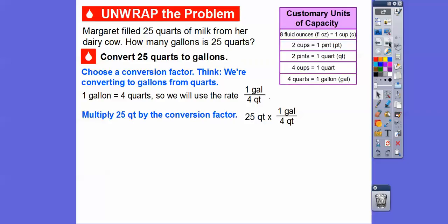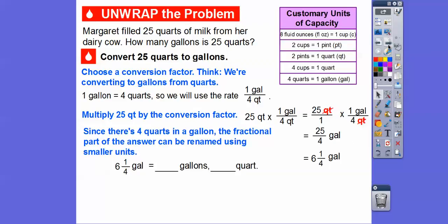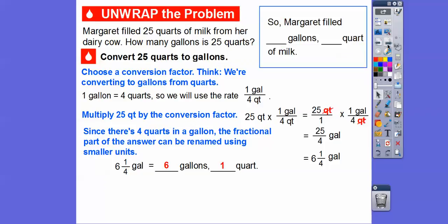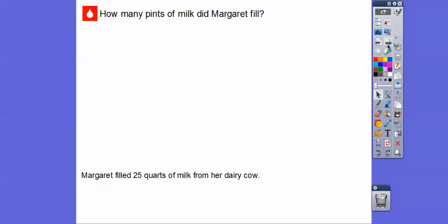We're going to multiply 25 quarts by the conversion factor 1 gallon to 4 quarts. The quarts cancel, leaving us with 25 fourths. Four goes into 25 six times—six times four is 24—so you have 1 left over. We have 6 and 1/4 gallons. Since there's 4 quarts in a gallon, the fractional part can be renamed using the smaller units. One-fourth of a gallon means there's going to be 6 gallons and 1 quart left over. Margaret filled 6 gallons and 1 quart of milk.